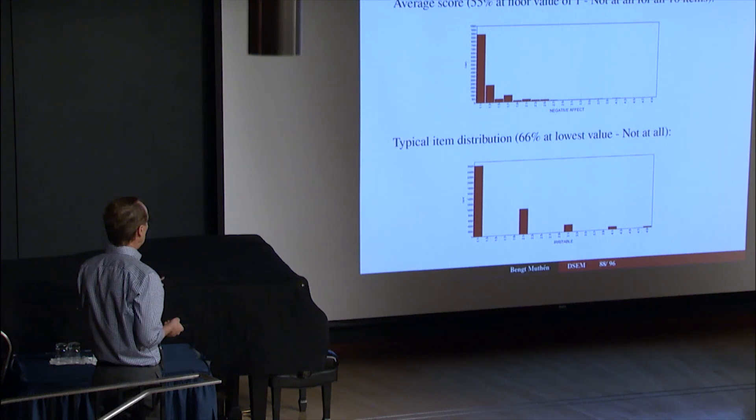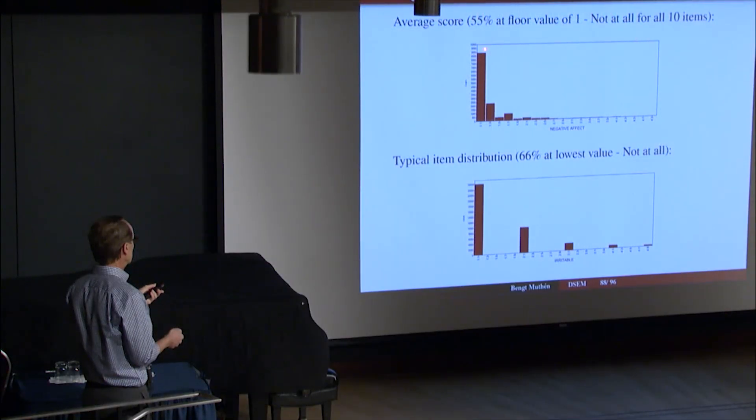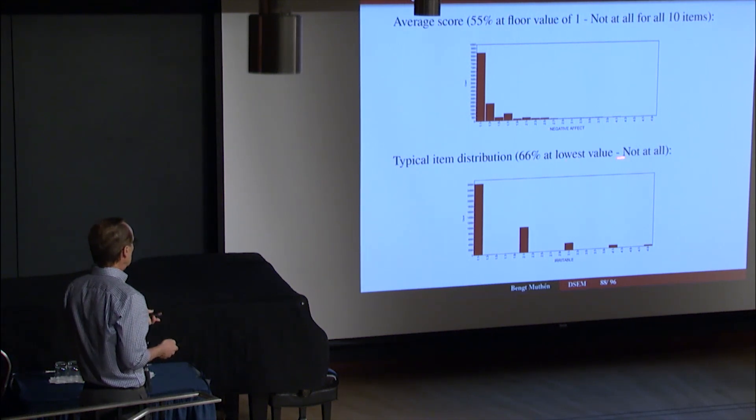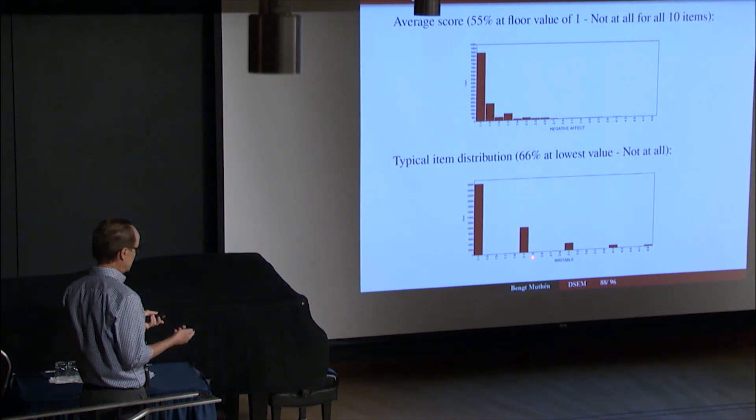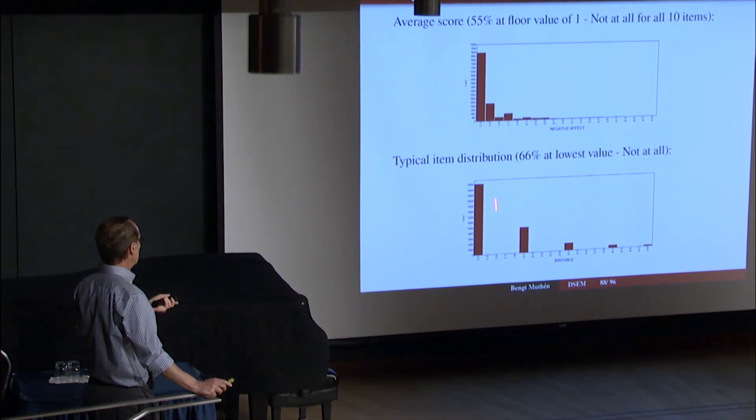Here is a distribution of the variable in the Bergman data. This is the average score. Looks like this. Strongly skewed. Very high piling up. Strong floor effect. 55% floor value 1, which is saying, Today I felt not at all any of those 10 items. So these are people who didn't have any negative affect at all. Here's a typical item distribution. This is the average. Here's for the item with 1, 2, 3, 4, 5 scale scores. 66% at the lowest value. And this is for the seemingly common item of irritability. Who isn't irritated at some point. But still 66% say that they're not at all.